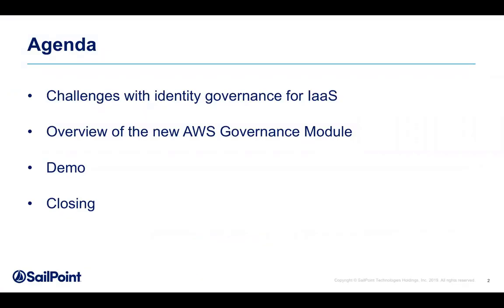Today we're briefly going to go over some items. This is certainly meant to be a longer discussion, but we'd like to very quickly show some capability sets here: some of the challenges we have with working with infrastructure as a service, in this case AWS; some of the things we've been able to do in the latest revamped version of our governance module for AWS; a very brief demonstration; and we'll close out with a summary.